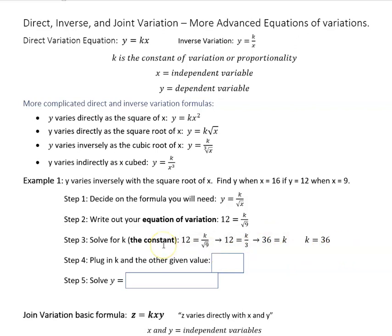And so to solve for k, you're going to take the square root of 9 and get 3, and then multiply both sides by 3. That's going to give you 36. Now you know that constant of proportionality or variation, which is 36. k equals 36. Now you're going to go back to your original equation, the one you had chosen in step 1.